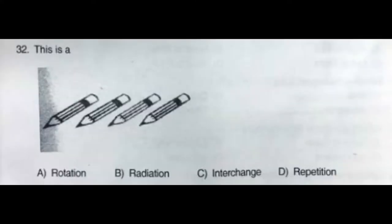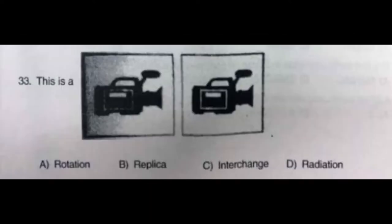Question number thirty-two: This is a — option A: rotation, option B: radiation, option C: interchange, option D: repetition. The correct answer is option D: repetition. Question number thirty-three: This is a — option A: rotation, option B: replica, option C: interchange, option D: radiation. The correct answer is option B: replica.